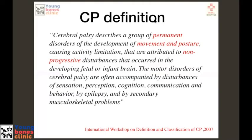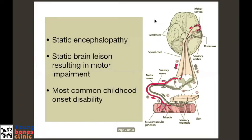By definition, cerebral palsy was defined as a group of permanent disorders of development of movement and posture. There are three important words in the definition: permanent, involving the motor and posture, and it is a non-progressive disorder. To summarize, it is a static encephalopathy — a static brain lesion resulting in motor impairment — and it is one of the commonest childhood disabilities.